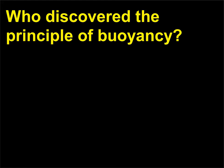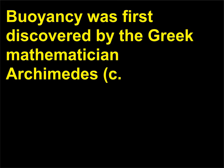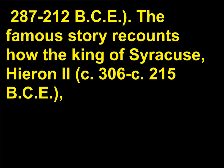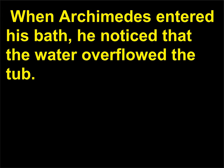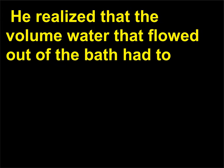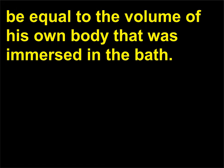Who discovered the principle of buoyancy? Buoyancy was first discovered by the Greek mathematician Archimedes (c. 287–212 BCE). The famous story recounts how the king of Syracuse, Hieron II (c. 306–215 BCE), asked Archimedes to verify that his crown was made of pure gold without destroying the crown. When Archimedes entered his bath, he noticed that the water overflowed the tub. He realized that the volume of water that flowed out of the bath had to be equal to the volume of his own body that was immersed in the bath.